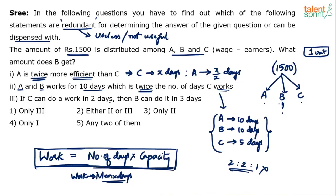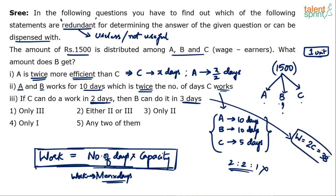Point number three: if C can do a work in two days, then B can do it in three days. What does statement three indicate? It indicates the relationship in the capacities of C and B. Let's assume the work is W. C can do it in two days, meaning work done is C's capacity into two, which equals B's capacity into three. So 2C is equal to 3B. That's what we get to know from statement number three — it gives us the relationship between the capacities of B and C. Statement number one gives us the relationship between the capacities of A and C. Statement three gives us the relationship between the efficiencies of B and C. But three alone also doesn't give the answer because it only tells us the efficiency ratio.